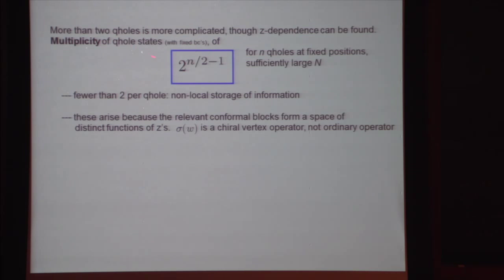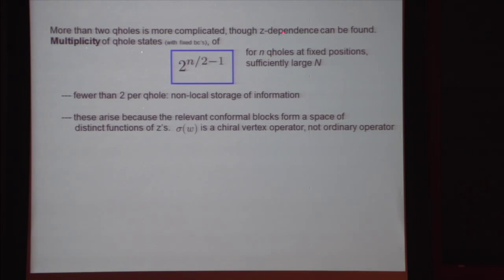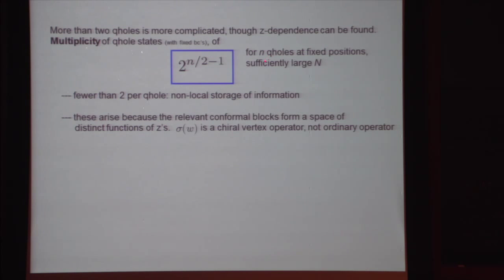What happens when we go to more than two quasi-holes is more complicated. It is actually possible to write explicitly the wave functions insofar as the Z-dependence is concerned. They're all conformal blocks. The number of these is 2 to the N over 2 minus 1, if we fix the boundary conditions and fix big N to be even. So little n is the number of quasi-holes, meaning we have square root 2 states per quasi-hole essentially.